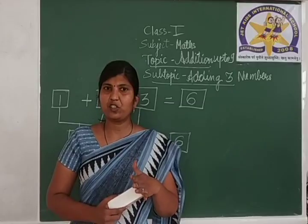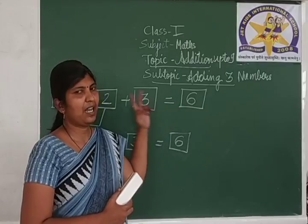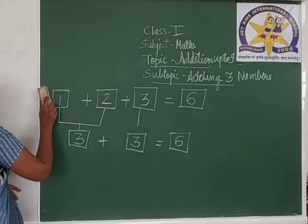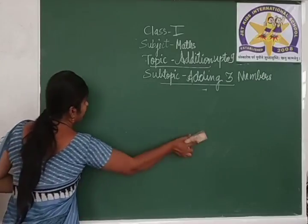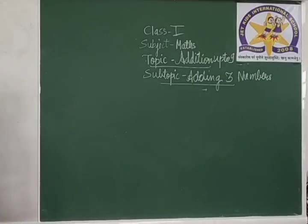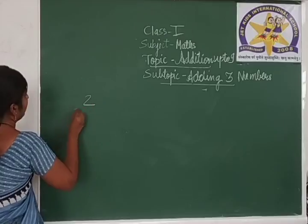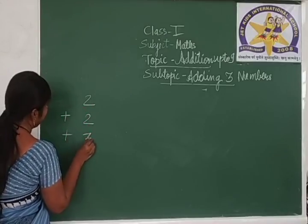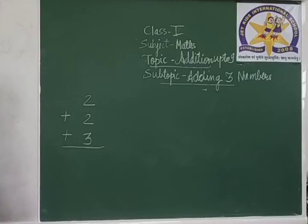In the previous video we saw how to add 2 digits vertically. Now here we are going to see how to add 3 numbers vertically. So let us see. I will take one example: 2 plus 2 plus 3. Here we are going to see how to add 3 numbers vertically: 2 plus 2 plus 3.